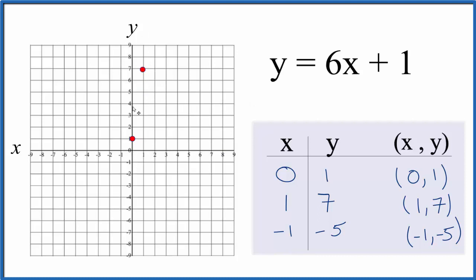We could draw a line with two points, but I like having three points, that way if I make a mistake, I can catch it. So let's put this negative 1 and negative 5 in. Negative 1x, negative 5y, and all of these points line up. Let's put a line through them.